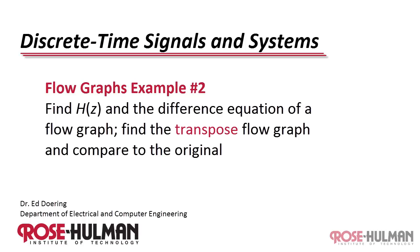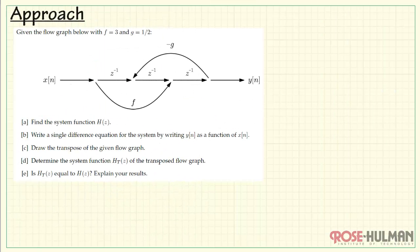This is flow graph example number two. Find the system function and difference equation for a flow graph, and then find the transposed flow graph and compare to the original.